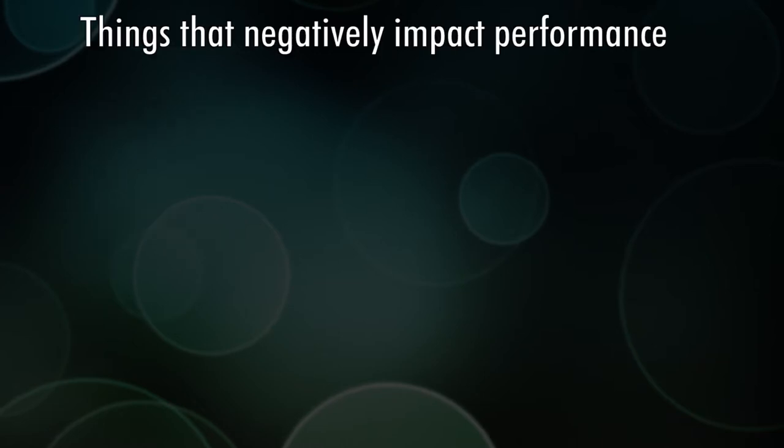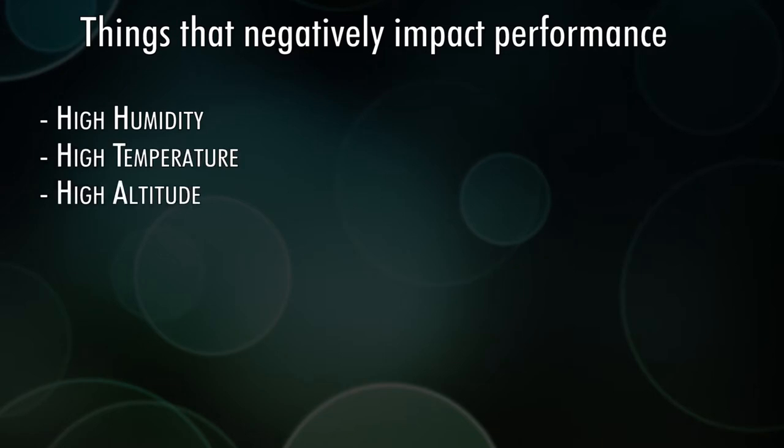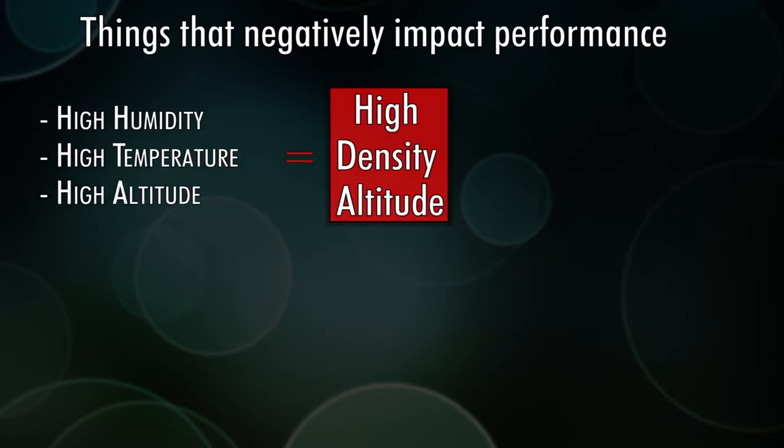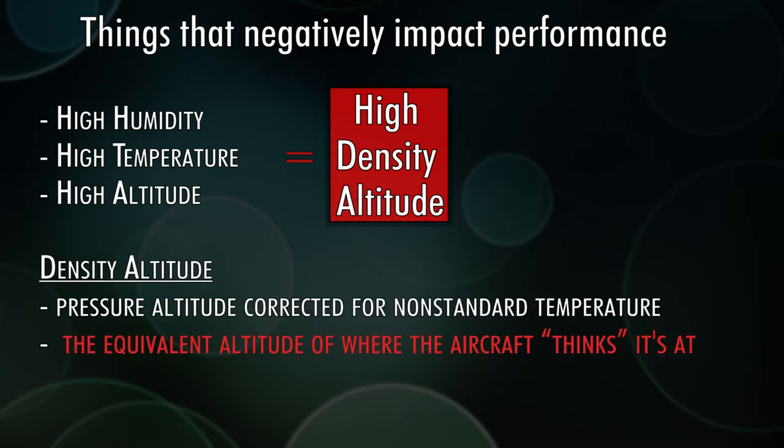Things that affect your performance negatively are high humidity, high temperature, and high altitude. You combine all those, you get a high density altitude. Now if you remember, density altitude is pressure altitude corrected for non-standard temperature. In plain English, density altitude is the equivalent altitude that the airplane thinks it is at and it performs accordingly.